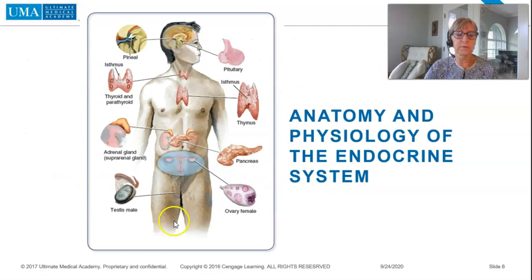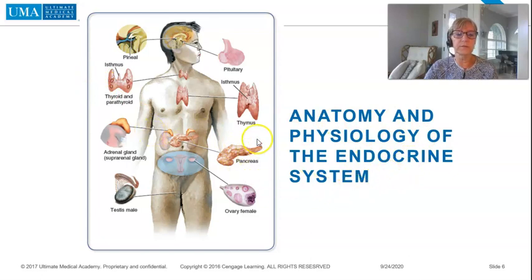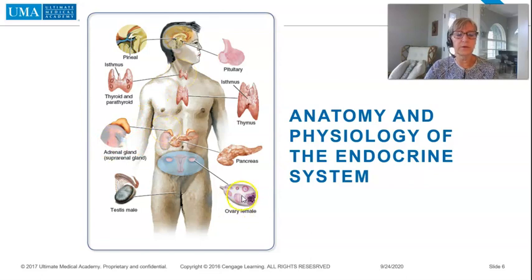This graphic depicts the anatomy and physiology of the endocrine system. We can see where the pancreas is, the thymus, pituitary, pineal, thyroid and parathyroid, adrenal gland, and then we have our ovaries and the testes.